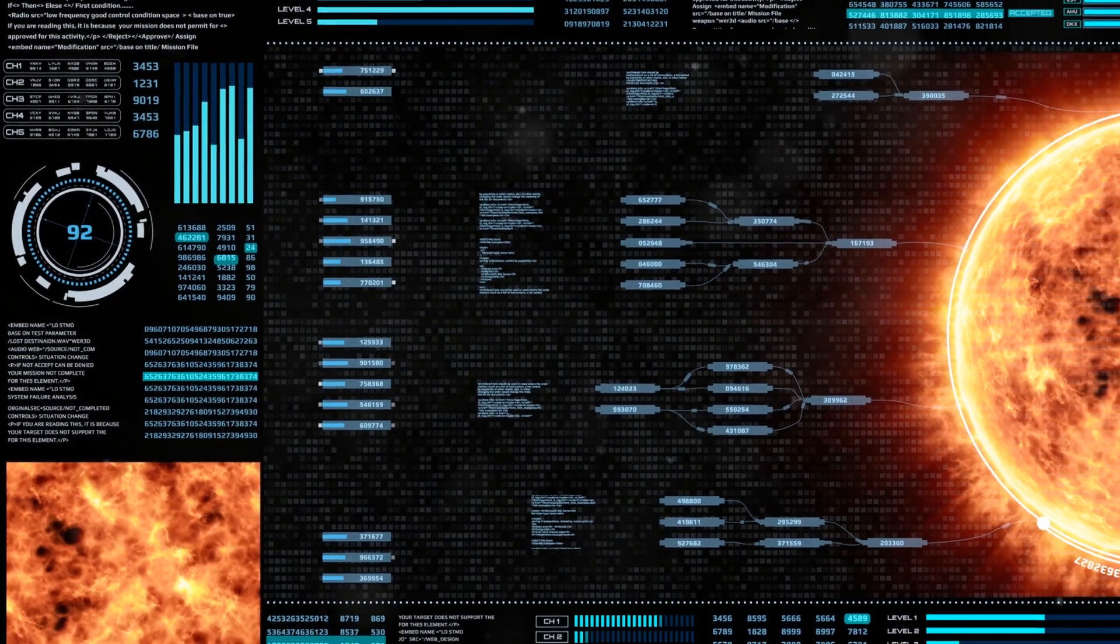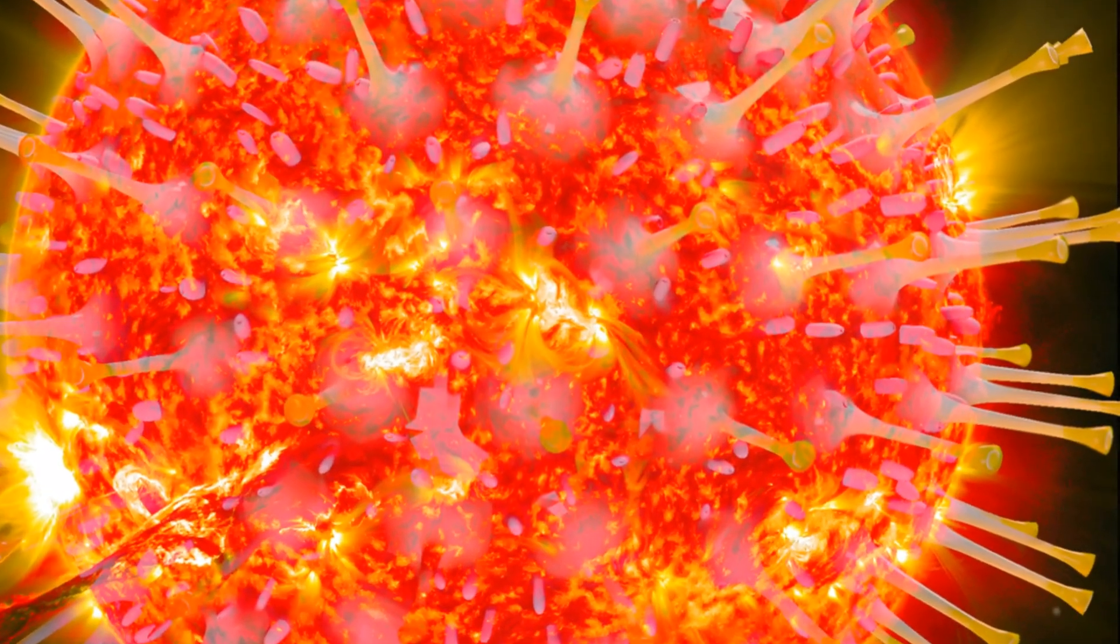The Sun is expected to reach the peak of its current activity cycle this year, a year earlier than anticipated. This solar maximum is characterized by an increased number of sunspots, solar flares, coronal mass ejections and now dark plasma ejections.